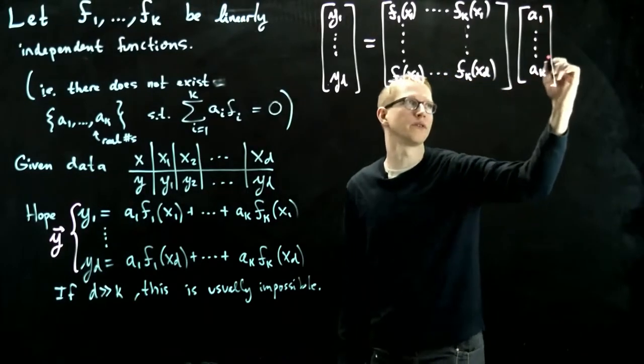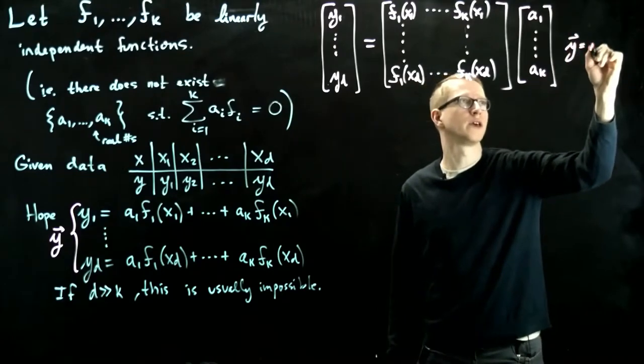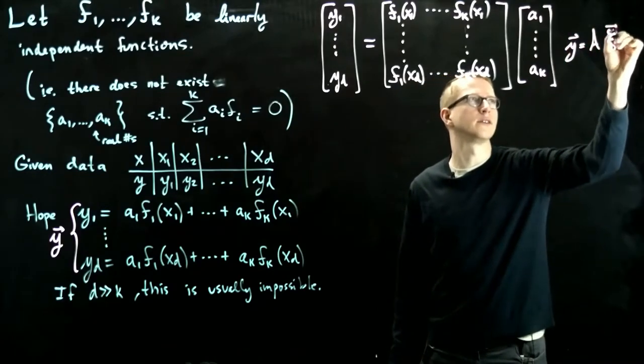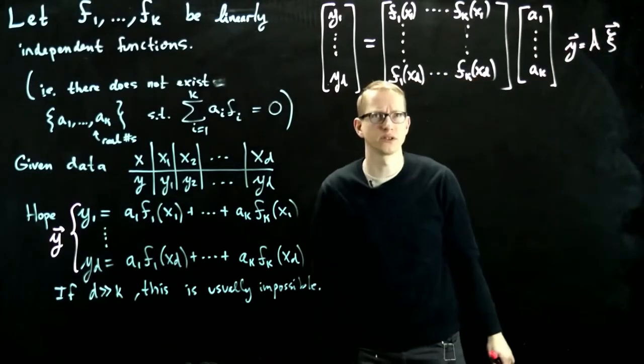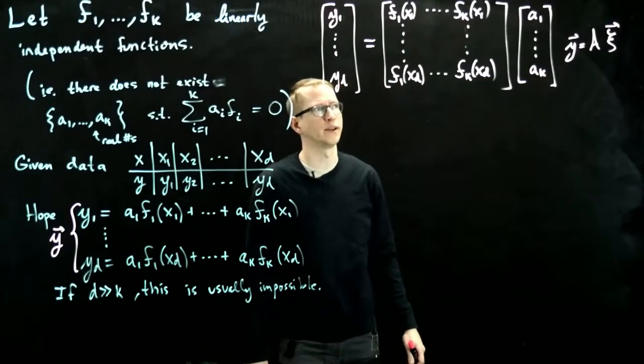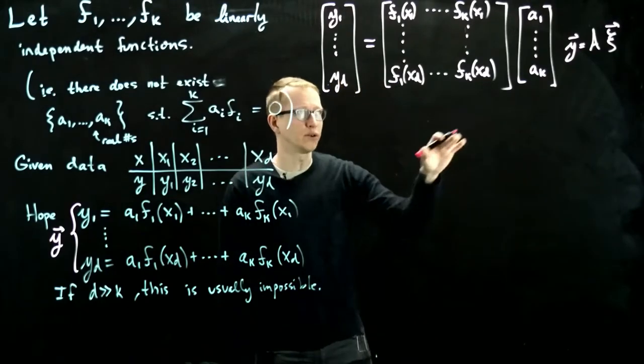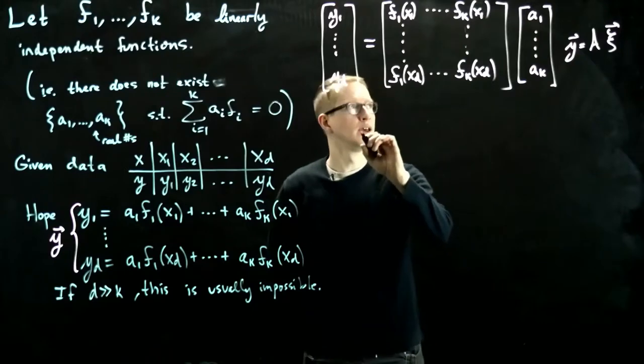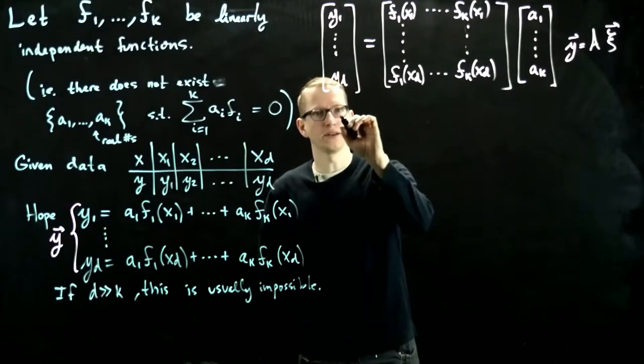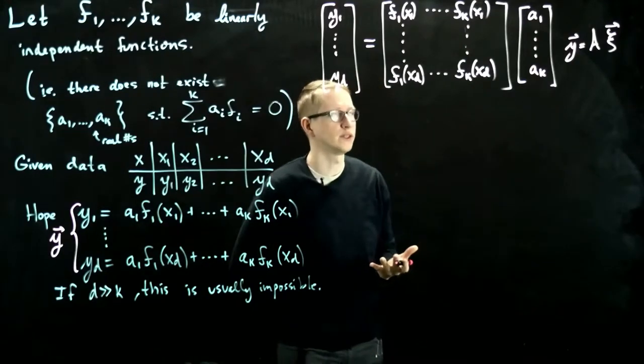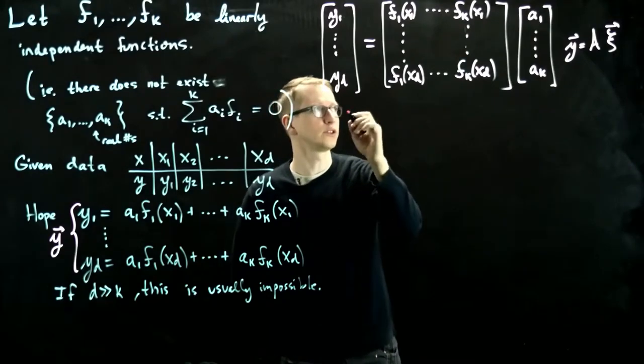So this is again of the form y equals A*xi, instead of x, to not confuse ourselves with the variable x that we've used for our data. So in general it's impossible to solve this. And the way that we would like to solve this is a least-square solution.